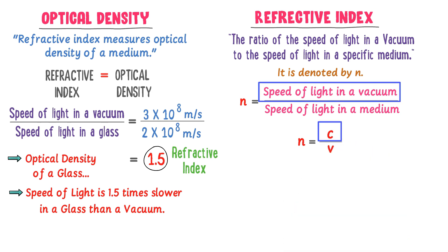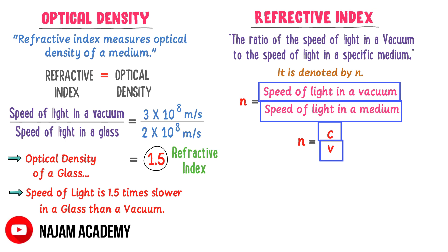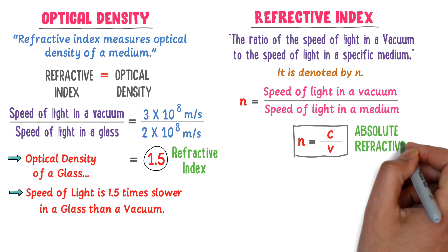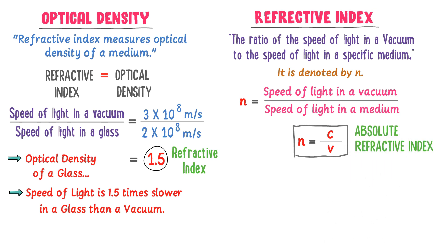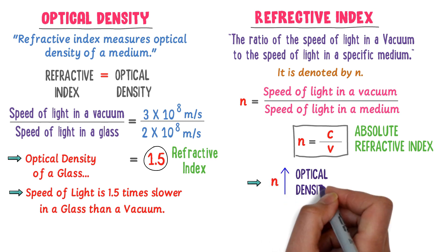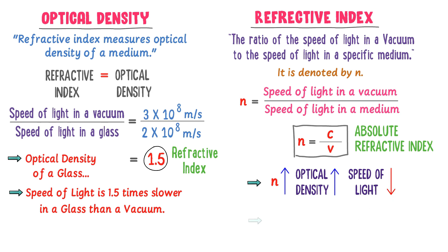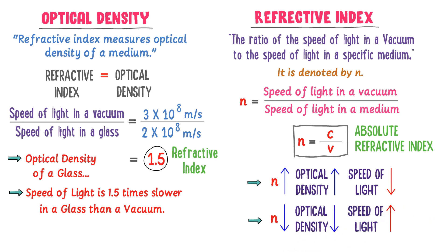Here c is the speed of light in vacuum, which is a constant value, and v is the speed of light in a specific medium like glass, water, etc. Remember that this refractive index is also called the absolute refractive index. When refractive index n is greater, the medium is more optically dense and the speed of light in it will be slow. When refractive index n is smaller, the medium is less optically dense and the speed of light in it will be high.